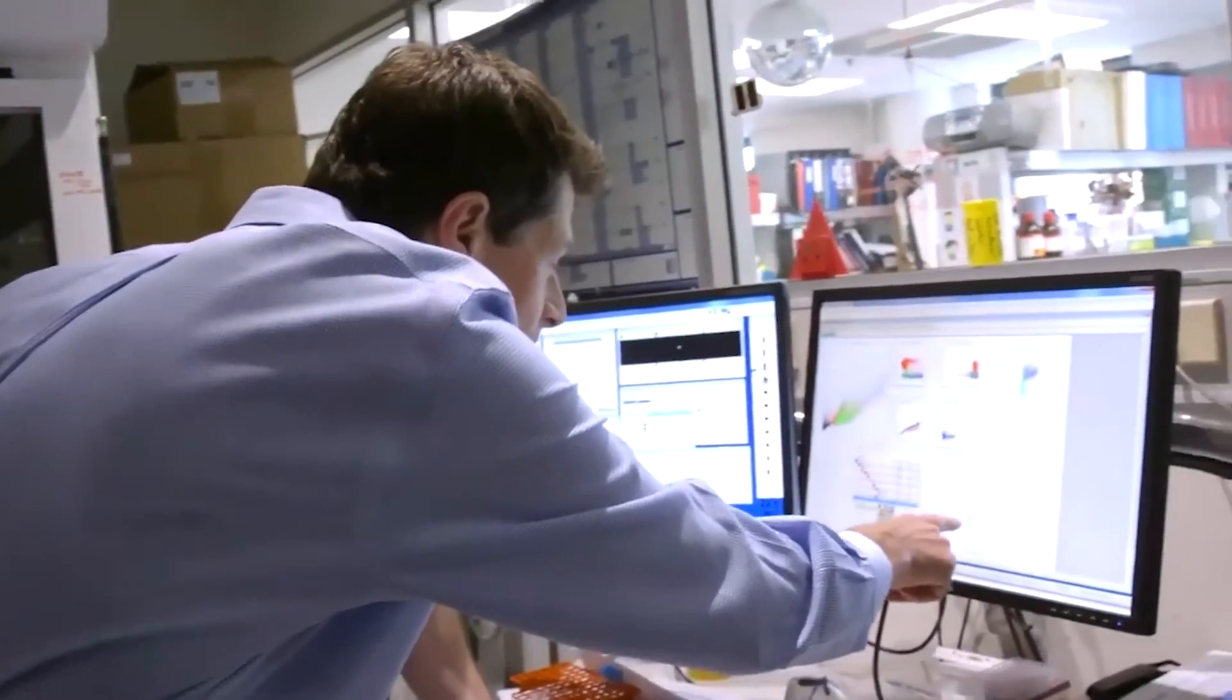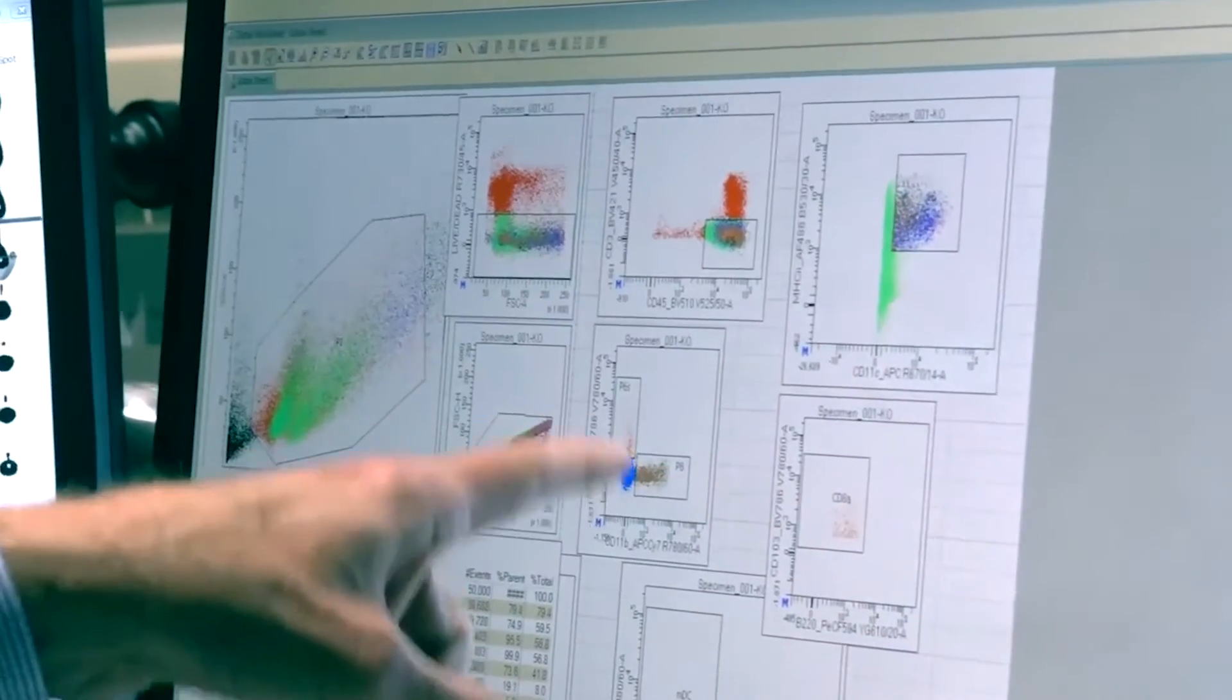It's not obvious what's different between the dots that are down here. The new machine is the BD Symphony. That's the Symphony A5.